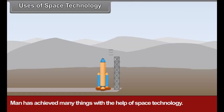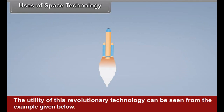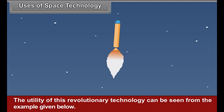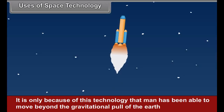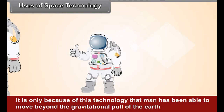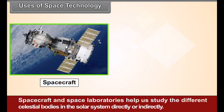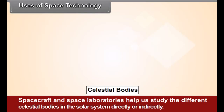Uses of Space Technology: Man has achieved many things with the help of space technology. The utility of this revolutionary technology can be seen from the examples given below. It is only because of this technology that man has been able to move beyond the gravitational pull of the Earth and enter the outer space.